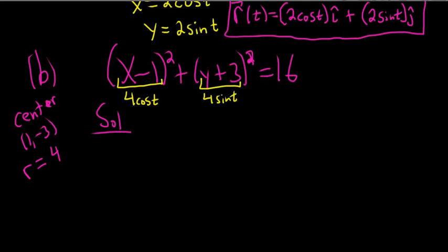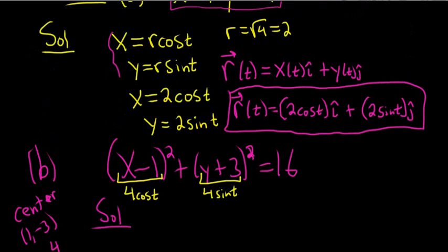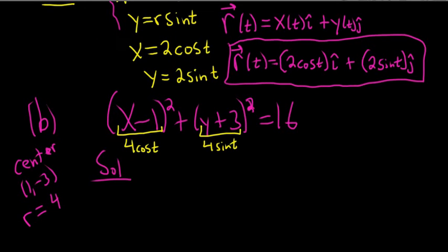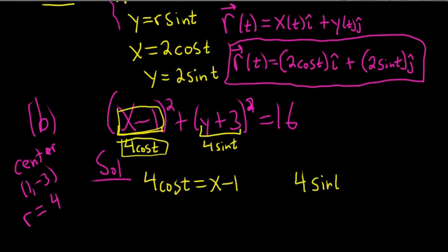the same thing that happened above is going to happen here, right? See up here we did it with 2 cosine t and 2 sine t, and we got 4. So here we should get 16. So now what you do is you just take this and set it equal to this. So we have 4 cosine t equals x minus 1. And over here we have 4 sine t equals y plus 3.